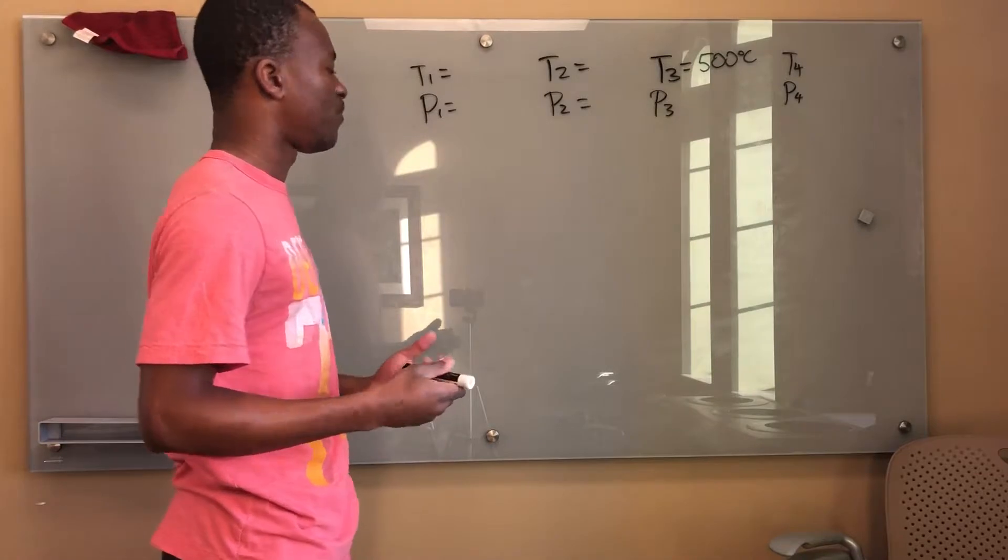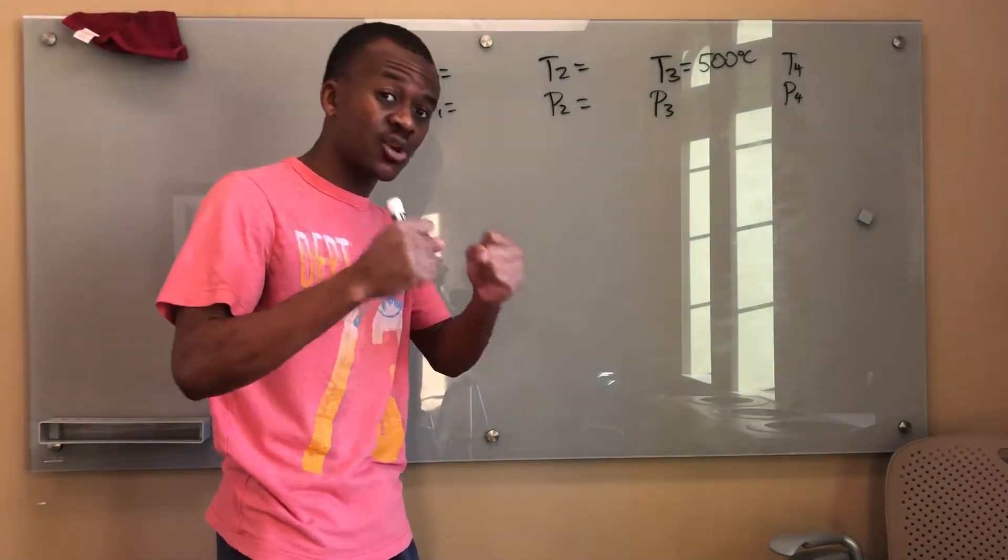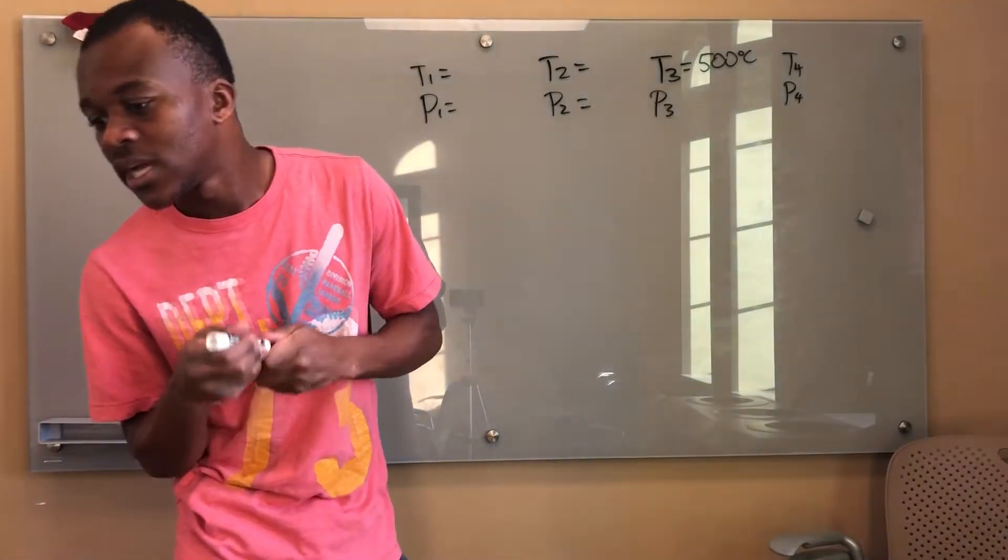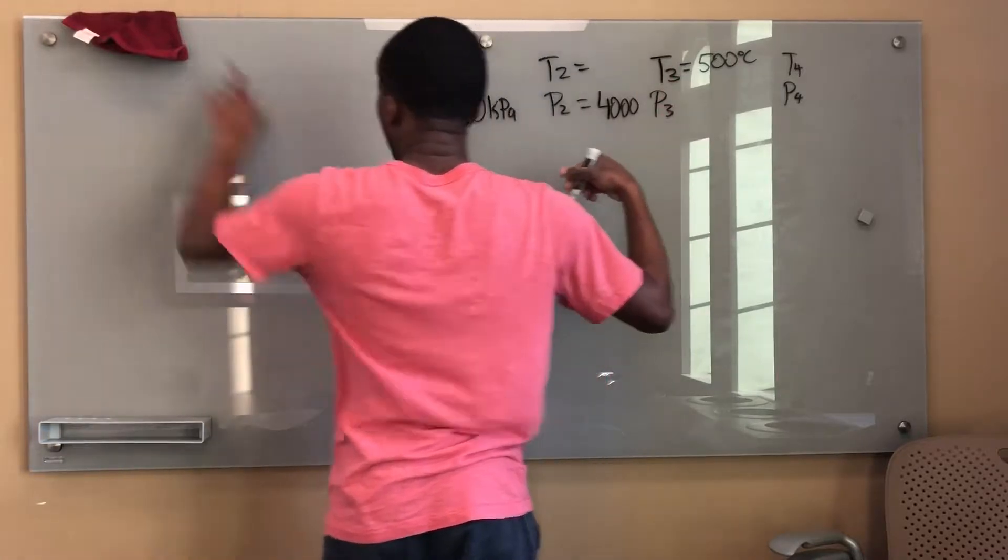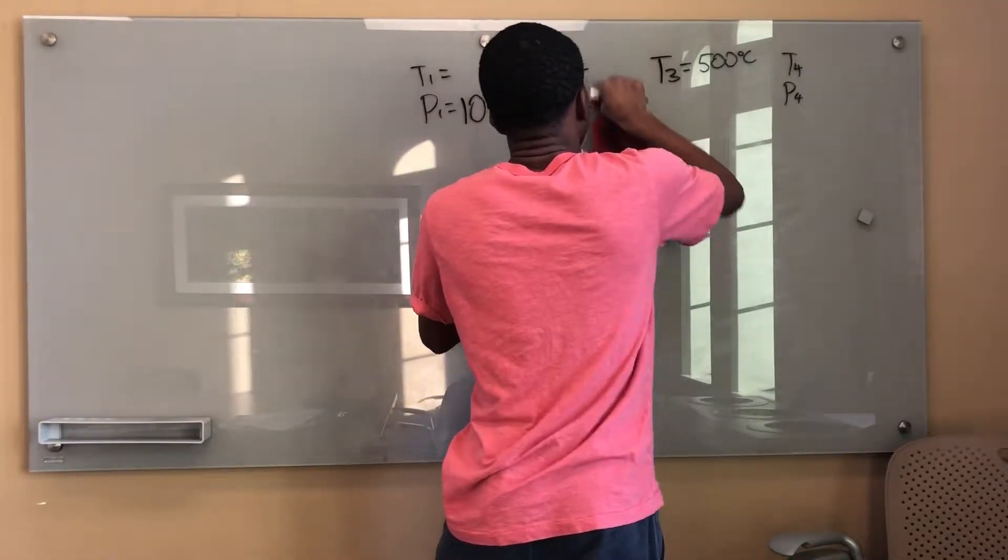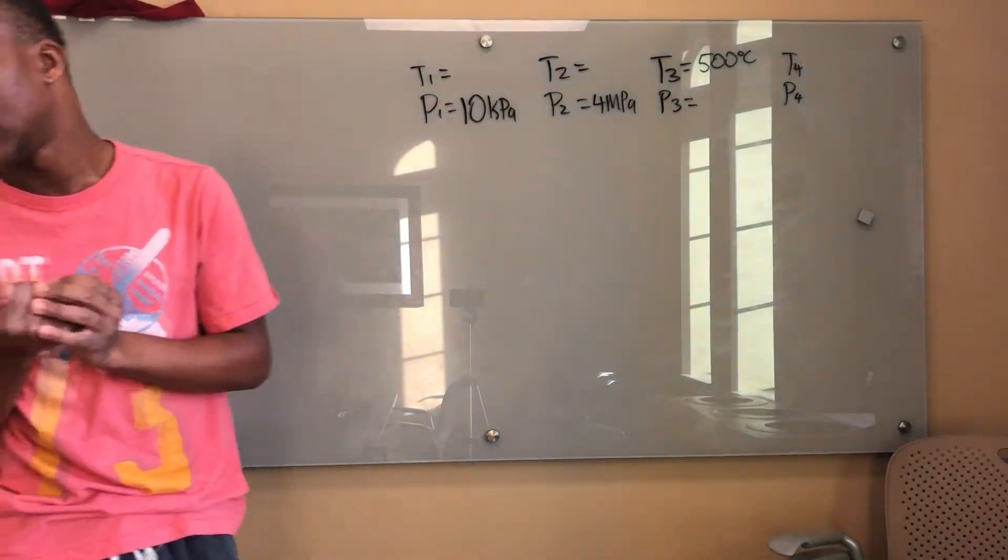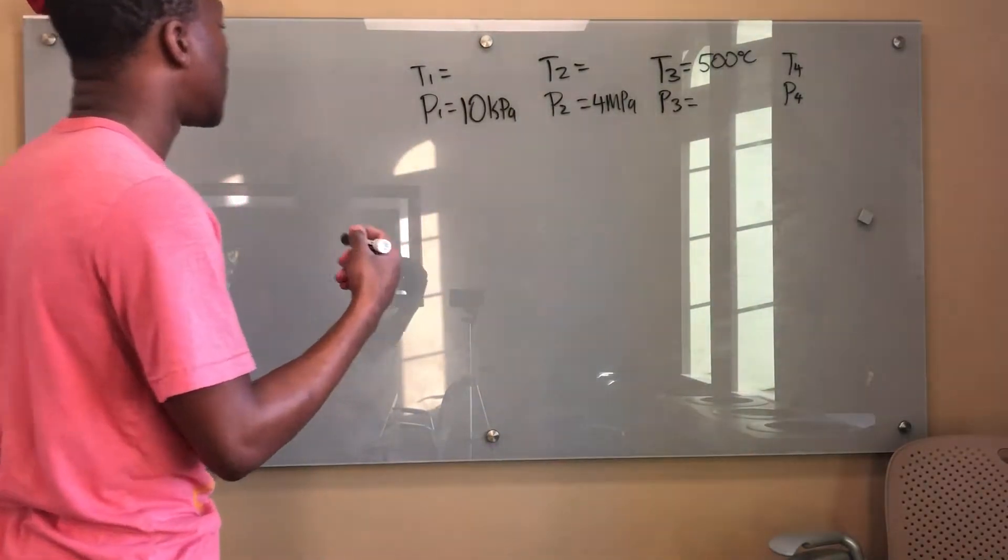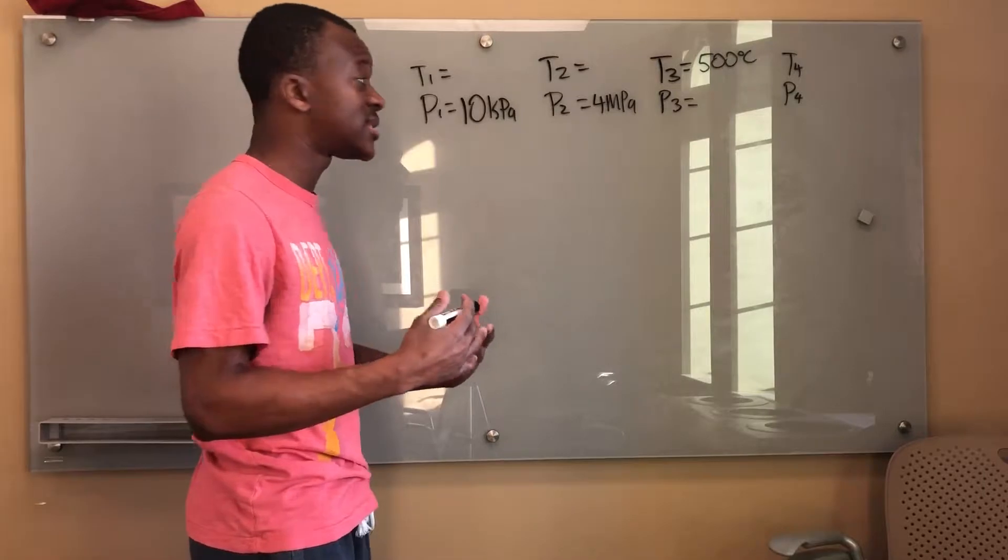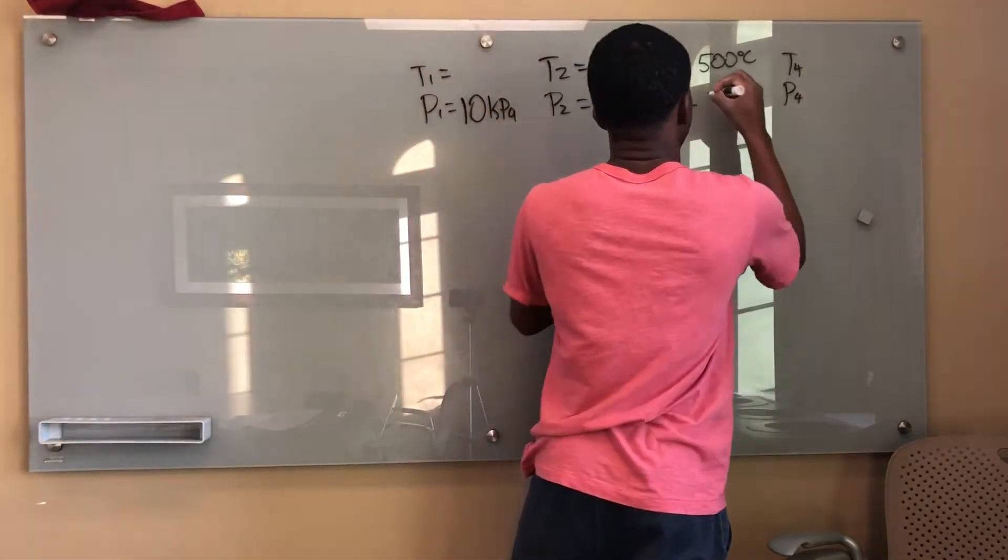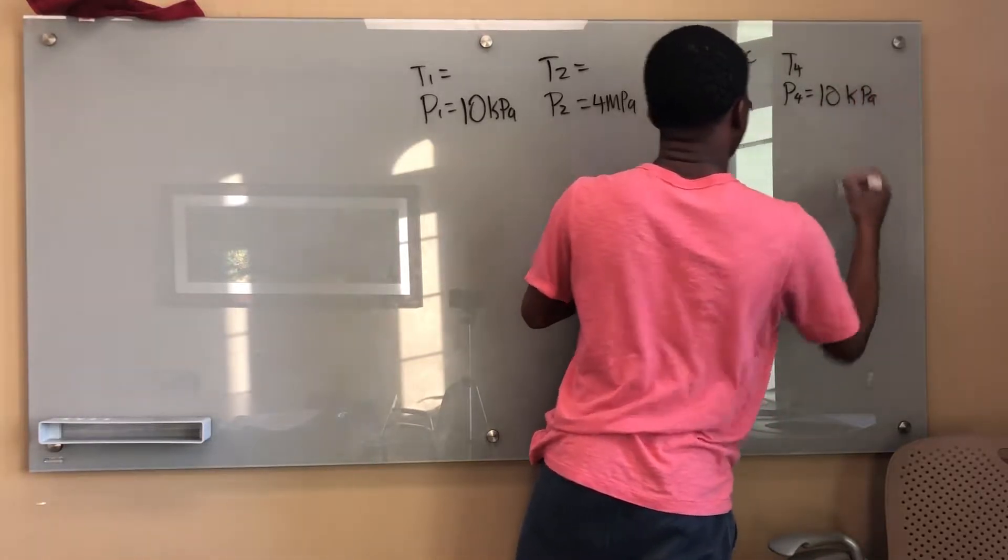For an ideal Rankine cycle, it only operates between two pressures. I know that p1 is the low pressure and p2 is the high pressure. Isentropic compression goes from low pressure to high pressure. So my p1 has to be 10 kilopascals and my p2 is 4 megapascals or 4000 kilopascals. I also know that p1 equals p4 and p2 equals p3 because the Rankine cycle operates between two pressures. So p3 equals 4 MPA and p4 equals 10 kilopascals.